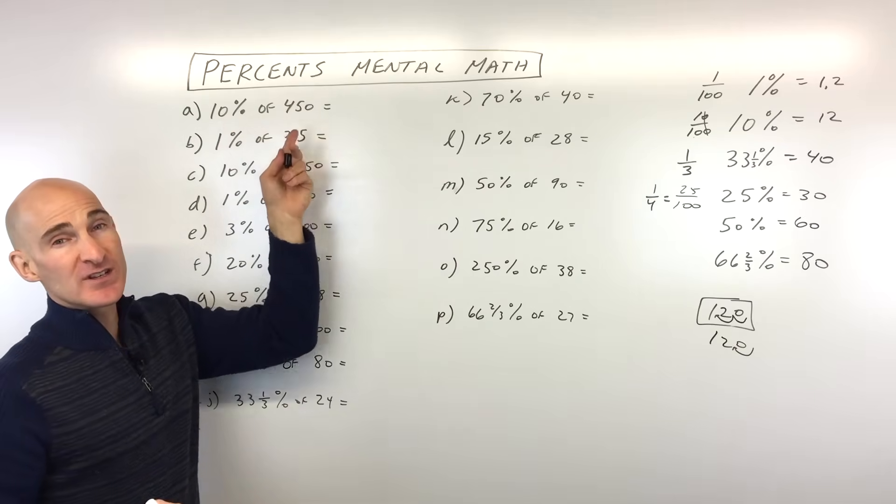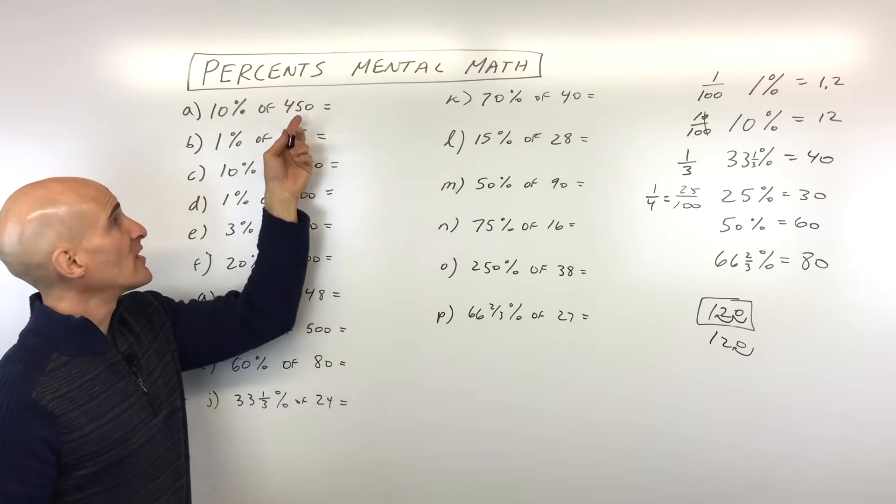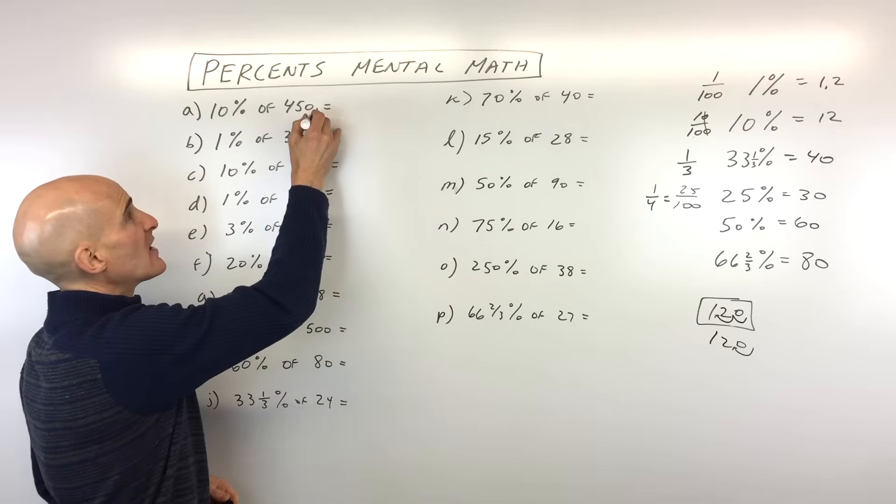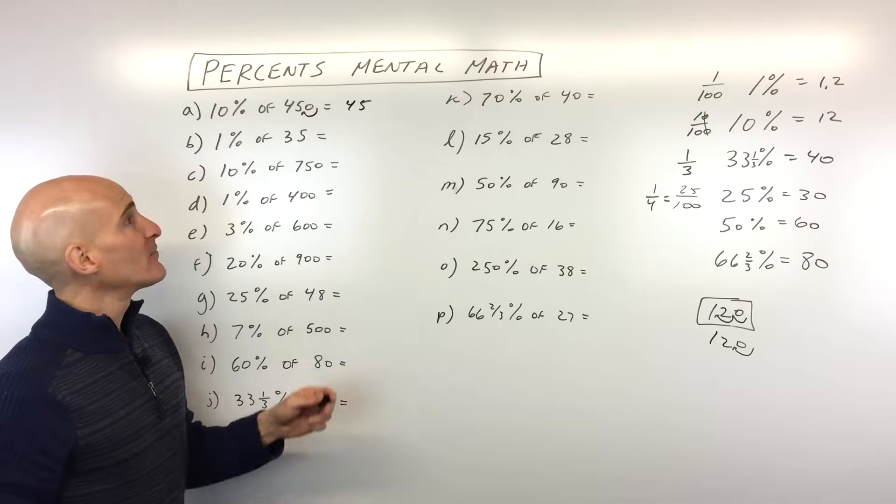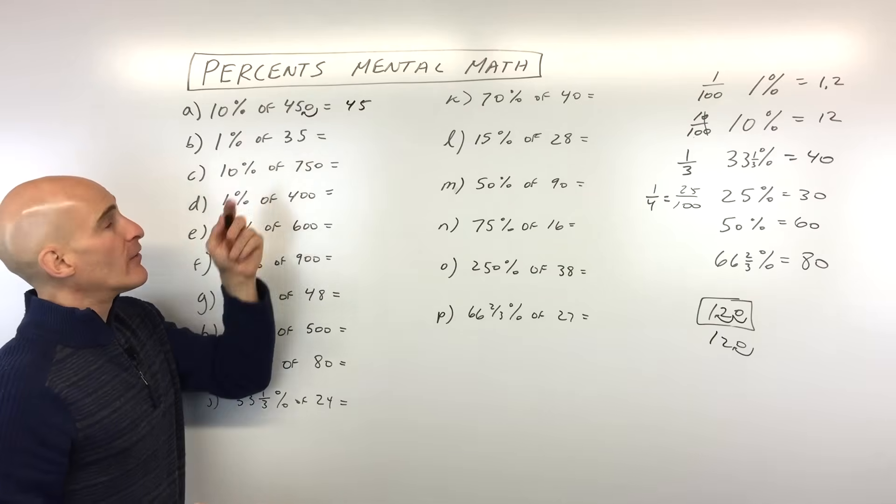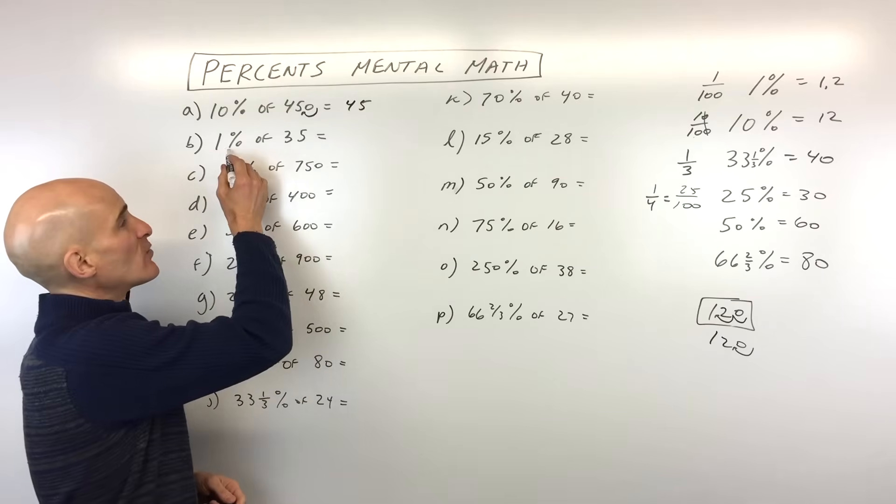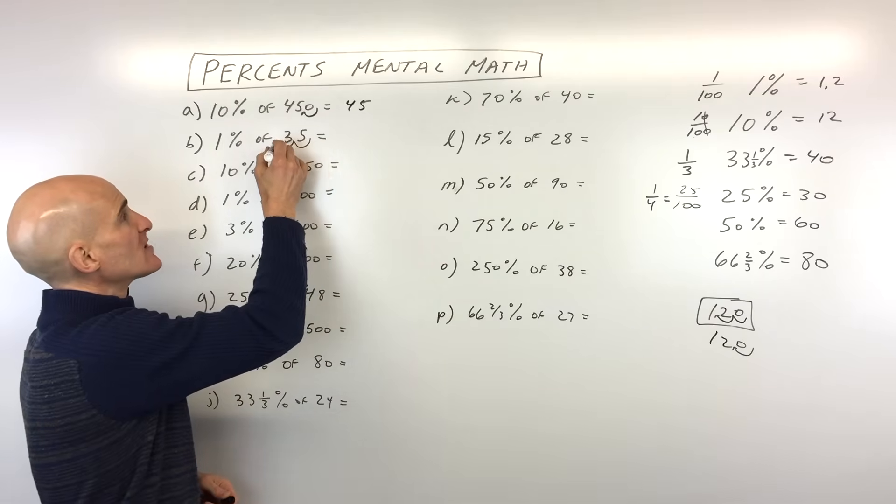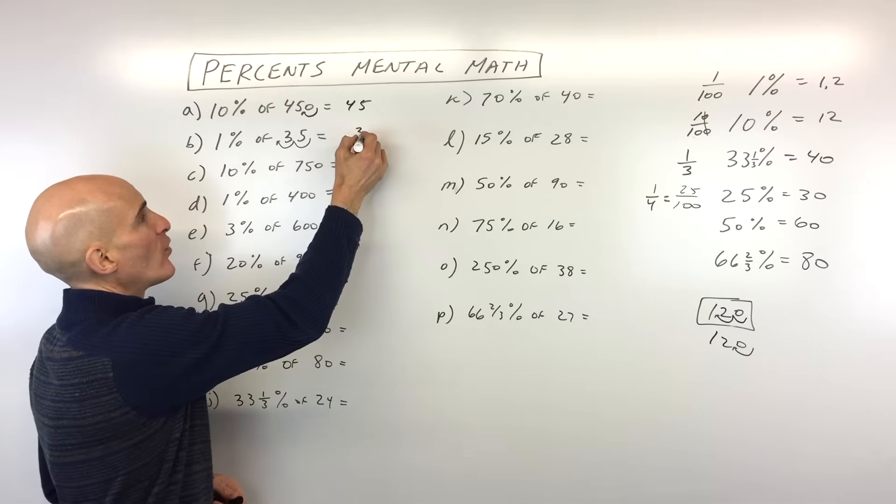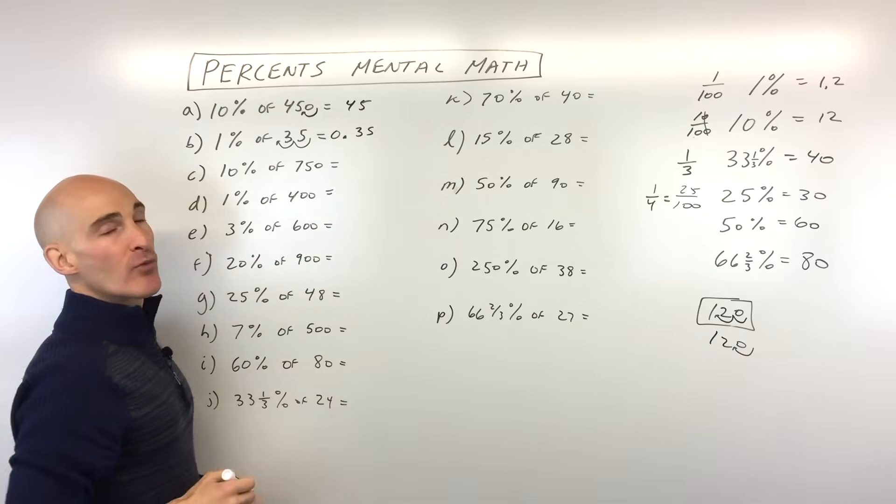So 10% of 450. So we said 10% is really like dividing by 10. We're moving that decimal one place to the left. So this one, 45, right? Okay. Now 1% of 35. Well, 1% we said was like dividing by 100, one part out of 100. So we're going to move that decimal two places to the left.